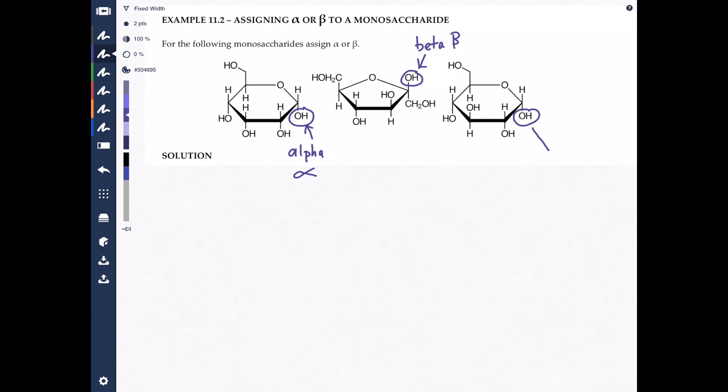So finally, looking at this one, this OH here is pointing down, so this is alpha. And that's as simple as that. Just find the oxygen in the ring, look one carbon to the right, that's the anomeric carbon. Find out if the OH is pointing down, that would be alpha. If the OH is pointing up, that would be beta. And that's how you assign alpha versus beta to a monosaccharide.